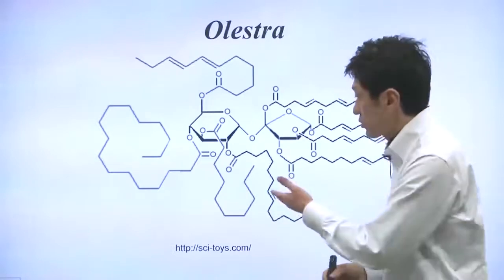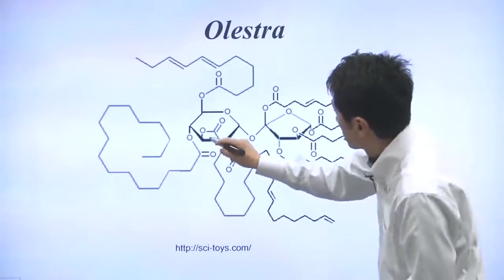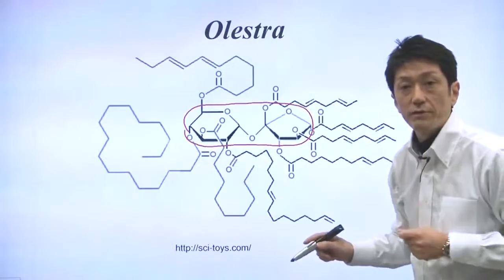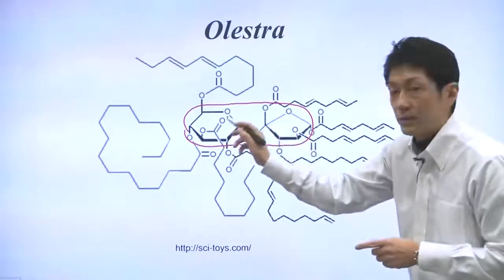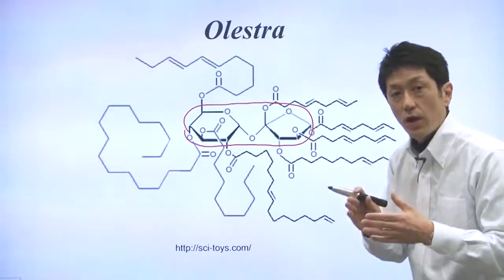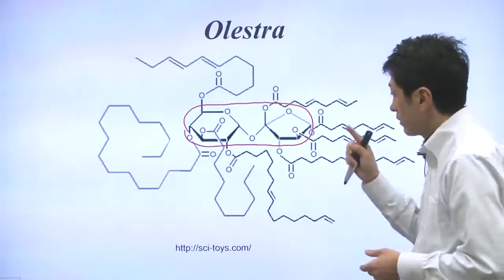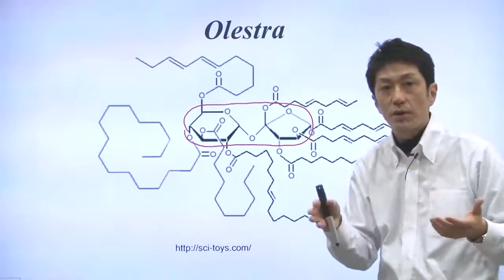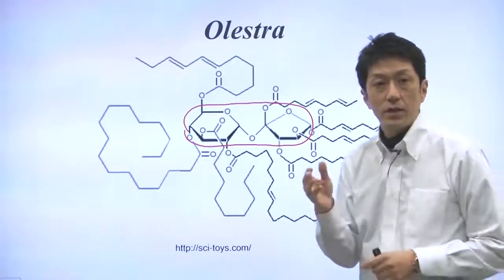You can see the structure right here. It has sucrose right here — can you see the sucrose structure? This is table sugar. All eight hydroxy groups of sucrose are esterified by fatty acids. This hybrid molecule seemed to be a nice energy-rich combination of sugar and fatty acids.